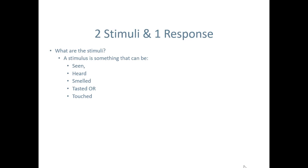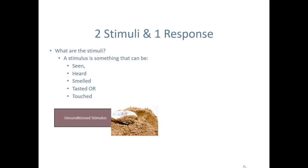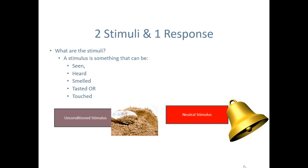In classical conditioning, there are always two stimuli and one response. A stimulus is anything that can be seen, heard, smelled, tasted, or touched — something that you sense with your senses. If we talk about Pavlov's dogs, there are two stimuli: the food powder, which the dogs can taste, and the bell, which the dogs can hear.